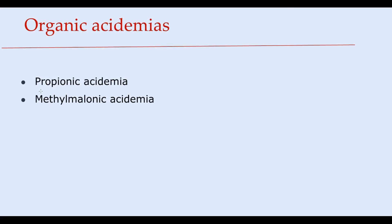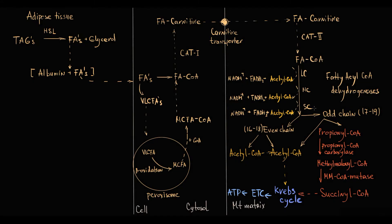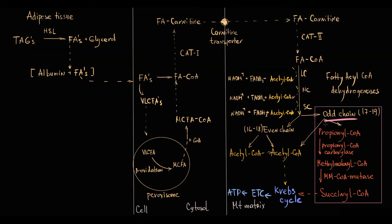Organic acidemias include two major pathologies: propionic acidemia and methylmalonic acidemia. They are all related to degradation of odd-chain fatty acids, so we will talk about this part of the general beta-oxidation pathway.